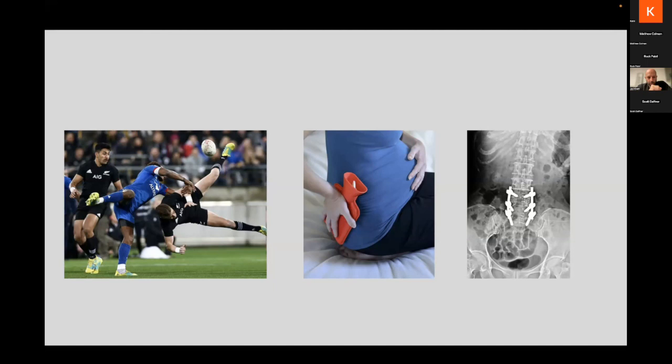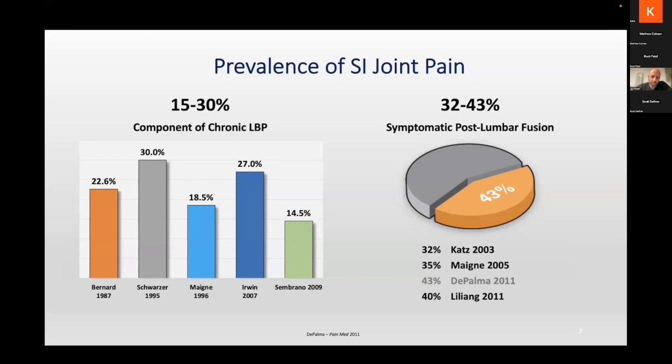In patients with chronic low back pain, anywhere between 15% and 30% are believed to have at least part of the etiology related to the SI joint, so you always want to be thinking about it. If you don't think about it, you'll miss it. Sometimes it is multifactorial — related to facet disease, disc disease — but you don't want to miss the possibility of an SI problem because the treatment is different.